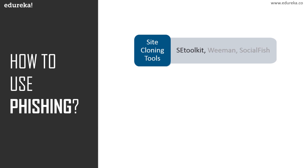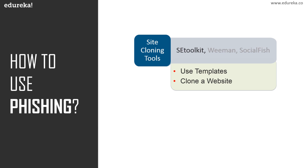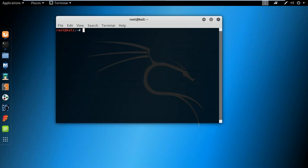When using a tool, there are two things you can do. The first is using pre-available templates — most phishing tools come with pre-available templates that you just use to create a fake web application. If you want to fake a web application that is not available as a pre-installed template, you can go for the second option: cloning a website. In this method, you enter the URL of the web application you want to fake, and the tool creates a clone of that web application.